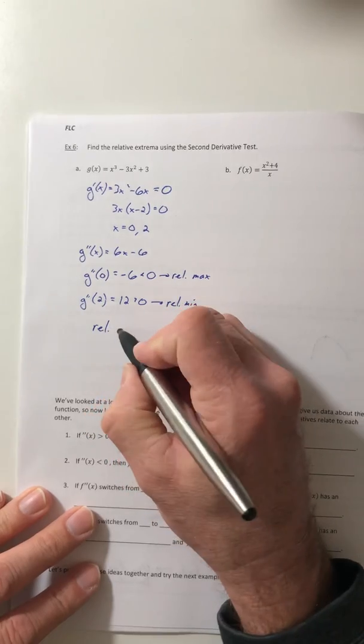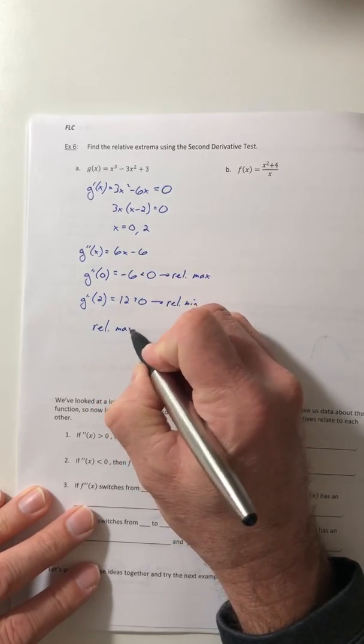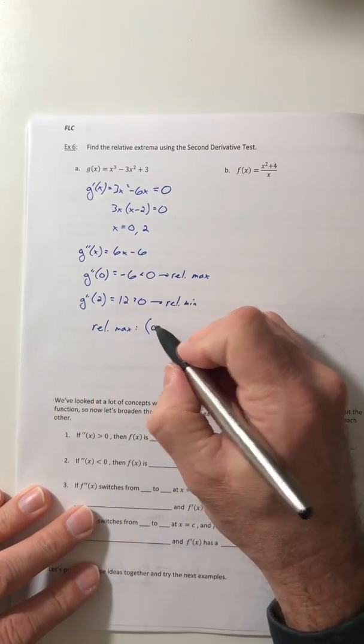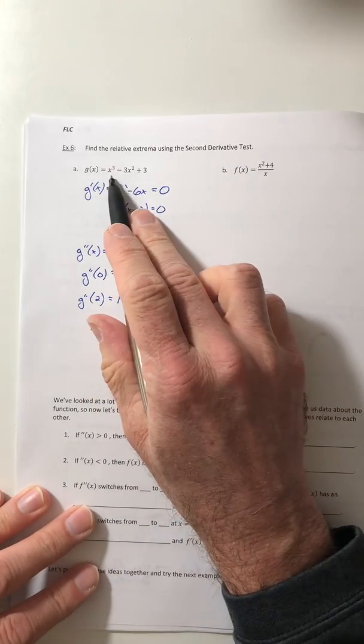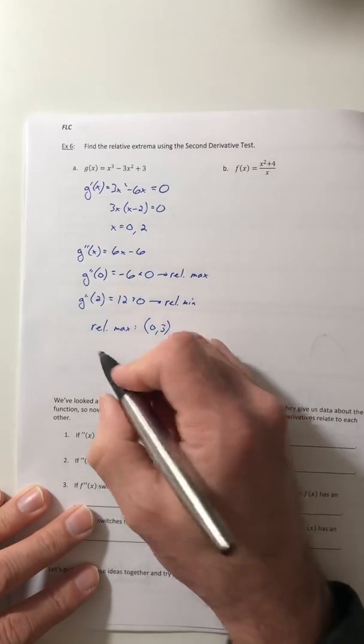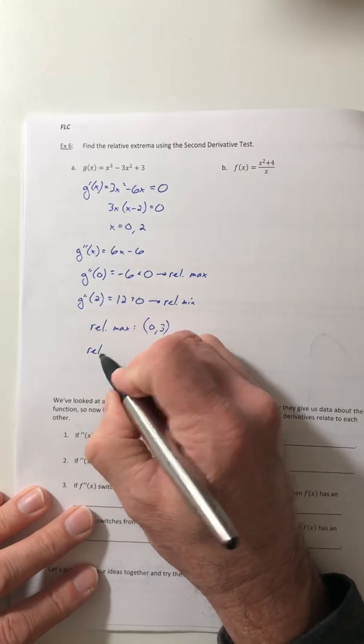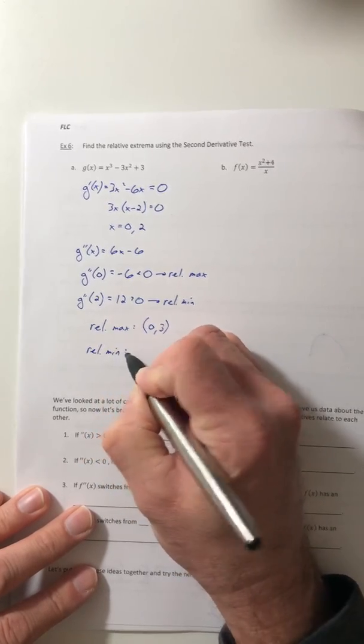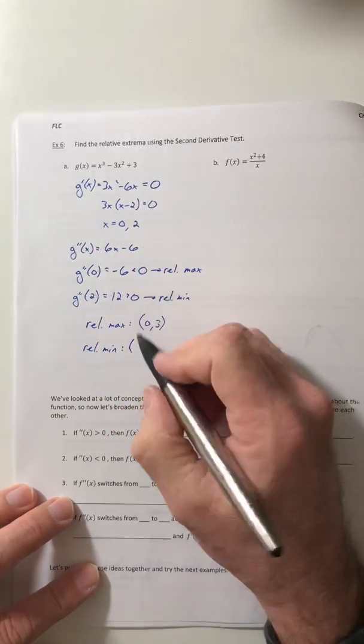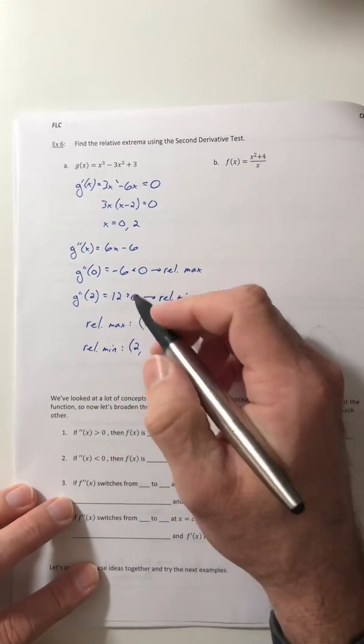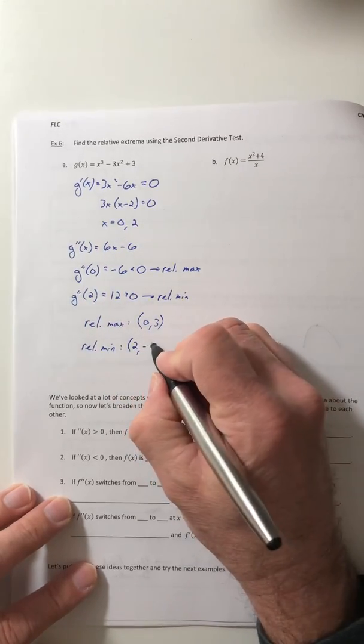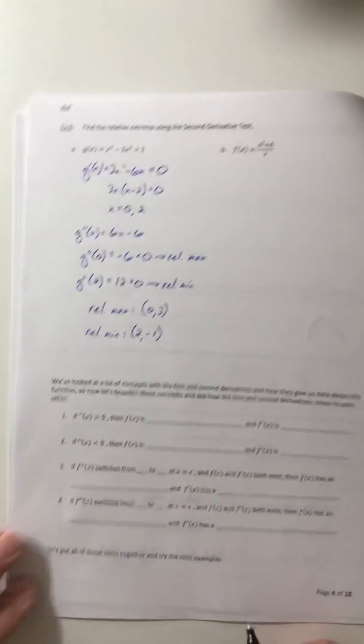All right, so we've got a relative max at the point when x is zero. I'll go back to your original function, so when x is zero, the y value is three. And then for your relative min, when x is two, you can plug that in there. And if you plug the two in, we're going to get negative one as an answer for y.